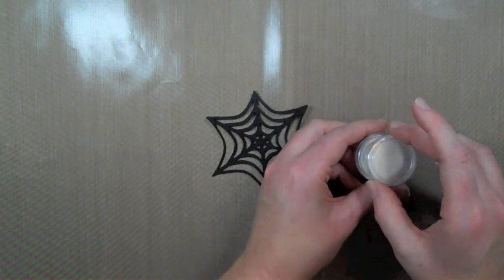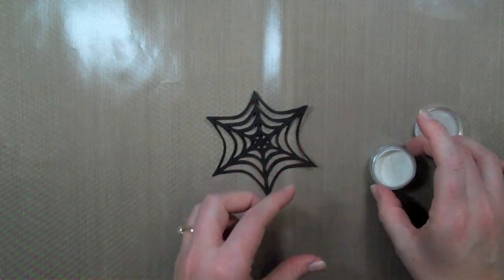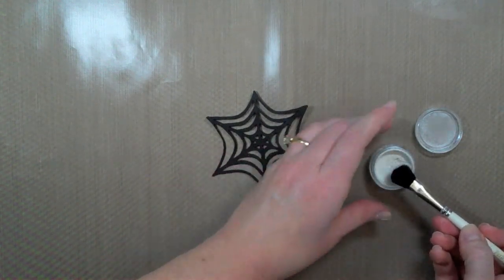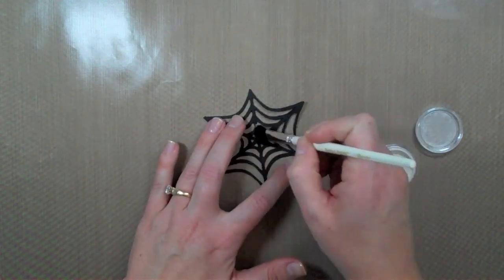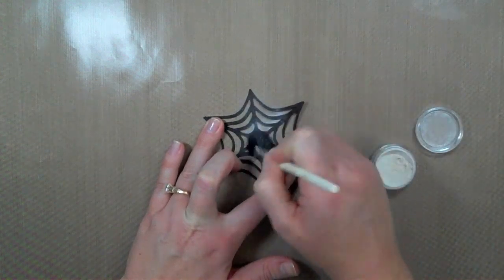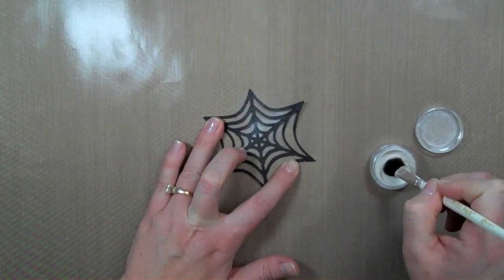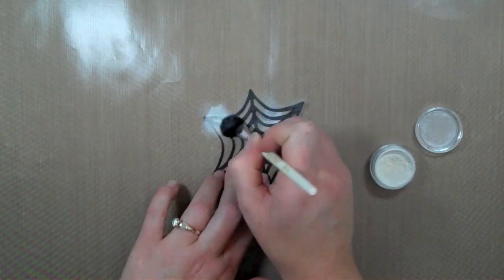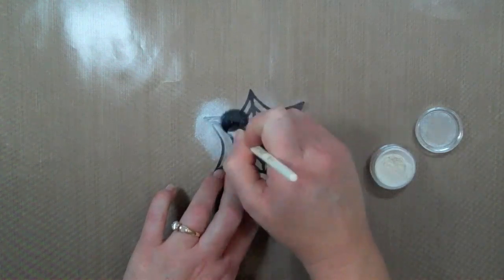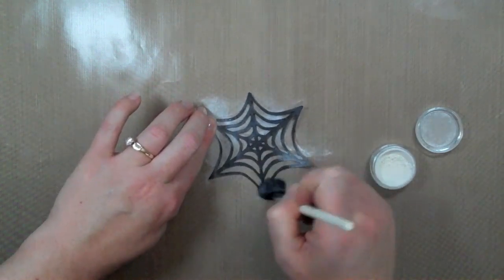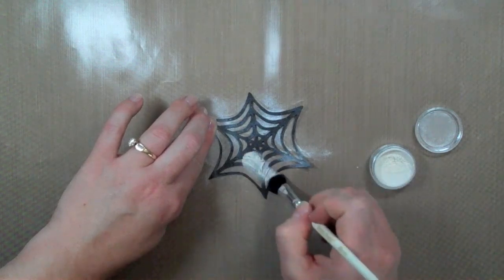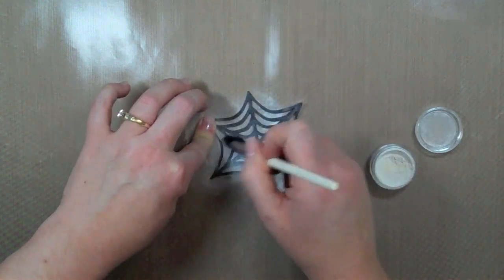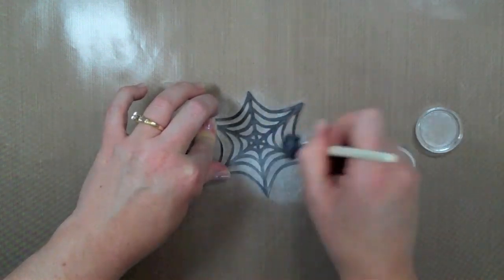And then I have some Perfect Pearls powder here and the color of this is actually the Perfect Pearl color. And I'm just going to take my brush here and dip it in some of that and then go over this and kind of give it that shimmery appearance that a spider web kind of has that iridescence to it. So I'm just going to cover the whole thing here. This is also going to help set it off from the other pieces that I'm using that are black on there and I just I don't want them to blend too much together.